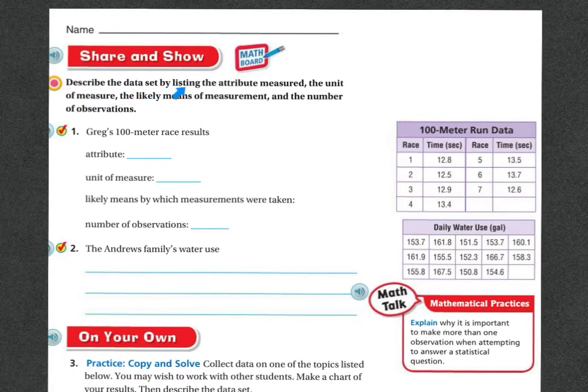All right, share and show. Describe the data set by listing the attribute measured, the unit of measure, and the likely means of measurement, and the number of observations. So here's my chart, 100 meters run data. I have my race, I have my time in seconds. Greg's 100 meter race results. The attribute is the time to run the race, right? The unit of measure right here, it's in seconds. And the likely means by which the measurements were taken would be a stopwatch. The number of observations looks like it goes up to seven.